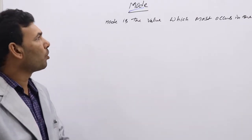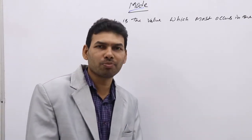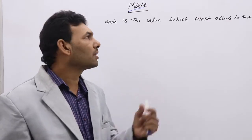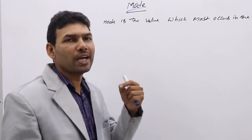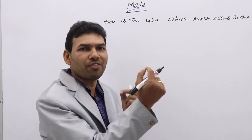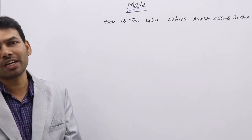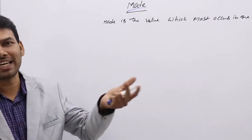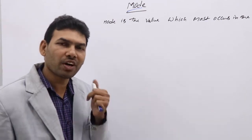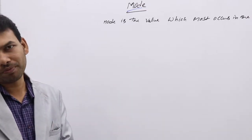How to calculate mode? In probability distribution also we discussed mode. In probability, the mode is the value of x for which the density function f(x) has maximum value, or if it is a probability function p(x) has maximum value. The value of x for which f(x) is maximum — that is the mode.